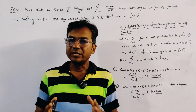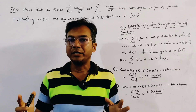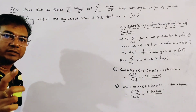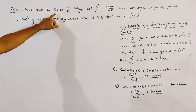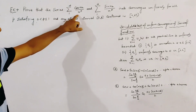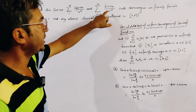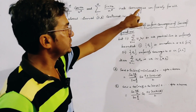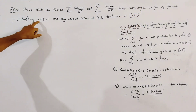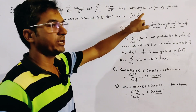This problem is from series and sequences of functions, related to uniform convergence. The problem is: prove that the series summation n=1 to infinity of cos(nx)/n^p and summation 1 to infinity of sin(nx)/n^p both converge uniformly for all p satisfying 0 < p ≤ 1, on any closed interval [a,b] contained in (0, π).